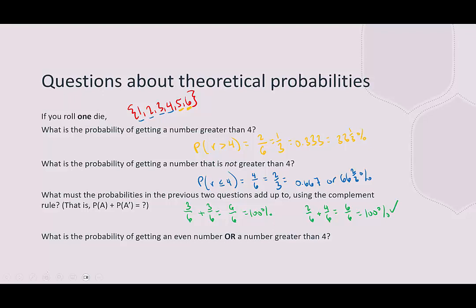What is the probability of getting an even number or a number greater than four? There is a formula we can use, but we can also just count the possible outcomes. If a number is included in both events, we only count it once. The even numbers are two, four, and six, and the numbers greater than four are five and six — but we only count six one time. That gives us four favorable outcomes. P(even or >4) = four out of six = two out of three = 0.667, or 66.7%.